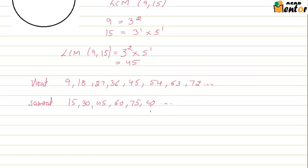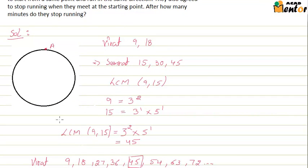Now we all know after each of these minutes, Virat will be at point A, and after each of these minutes, Samrat will be at point A. So when suppose Samrat has reached point A after 30 minutes, but Virat is not there. He has already passed point A because he was at point A after 27 minutes. So the first time they will be at point A is after 45 minutes. It is a very easy way to look at it.